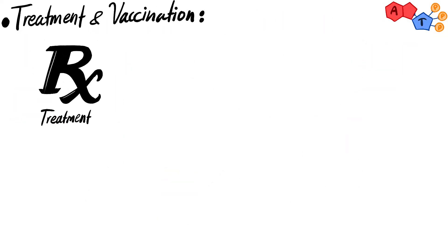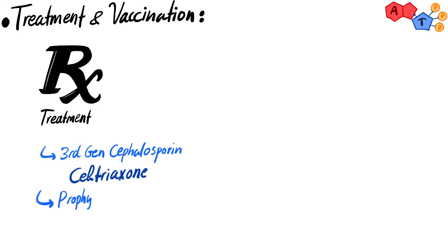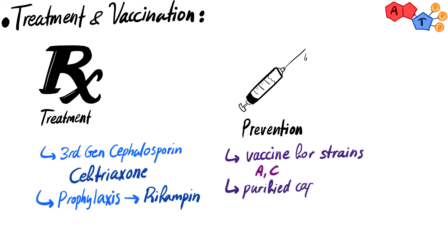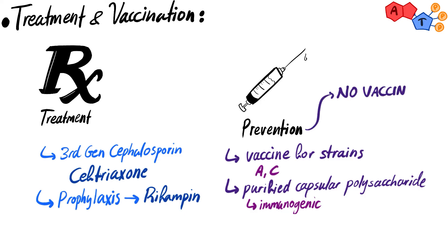For treatment, we use the third-generation cephalosporin ceftriaxone. For close contacts of the infected patient, we use rifampin as prophylaxis. For prevention, there is a vaccine for certain strains — groups A and C — using purified capsular polysaccharide, which is immunogenic for these strains. However, there is no vaccine yet for group B, because the type B capsule is not immunogenic, and most infections worldwide are caused by the type B strain.